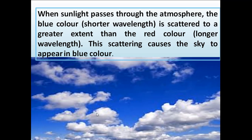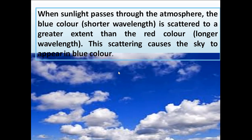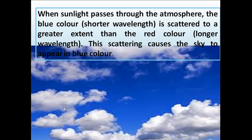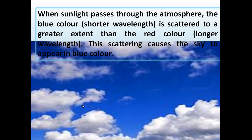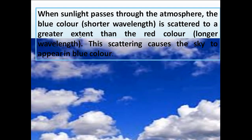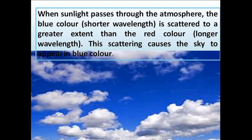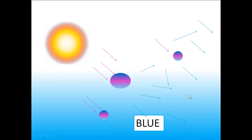Let me explain why the sky appears blue. When sunlight passes through the atmosphere, the blue color is scattered to a greater extent than the red color. Red color possesses a longer wavelength, but blue color possesses a shorter wavelength, and this scattering causes the sky to appear blue. Shorter wavelength colors are scattered much more than longer wavelength colors. Blue color comes under the shorter wavelength range and so is scattered more than the other colors, and hence the sky appears blue.